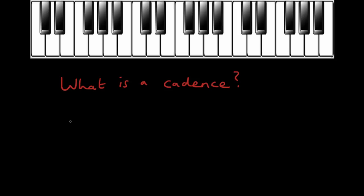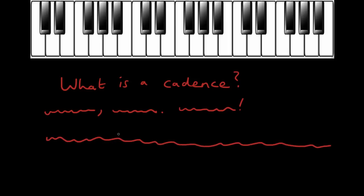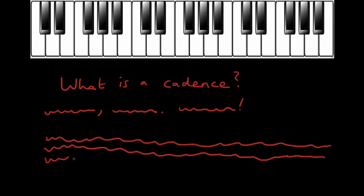I often think of cadences as being a bit like musical punctuation. When we're writing English, we use things like commas, full stops, or even question marks and exclamation marks to help guide the reader through our ideas — to break them up and give them structure. If you imagine writing that carried on forever without any breaks, full stops, capital letters, or commas, it would get quite difficult to follow. So there's a reason we use punctuation in written language, and just like written language, music needs these kinds of structures to help us make sense of ideas as they unfold.